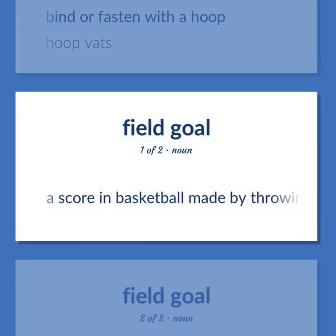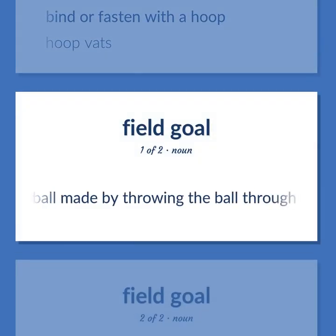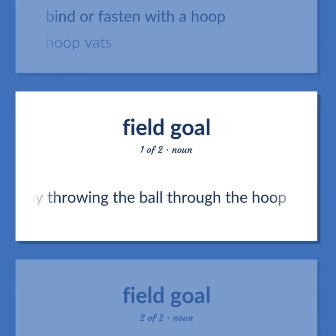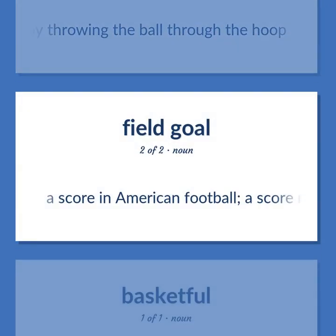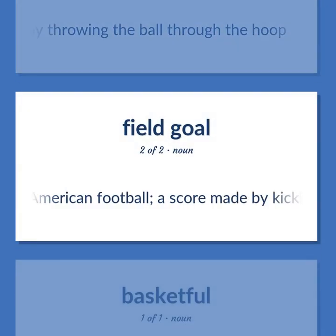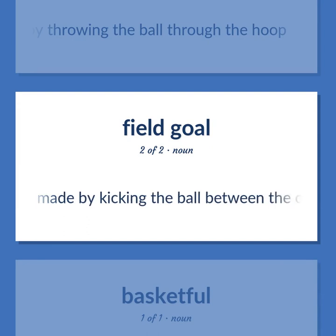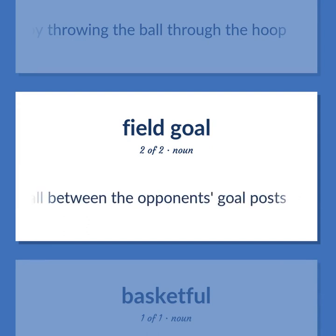Basket: a score in basketball made by throwing the ball through the hoop. Field goal: a score in American football — a score made by kicking the ball between the opponent's goal posts.